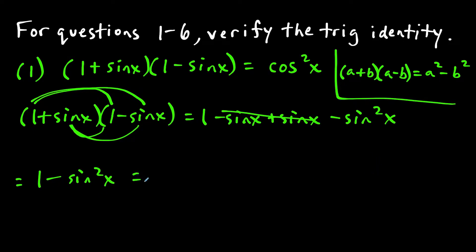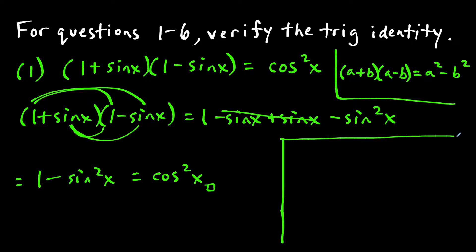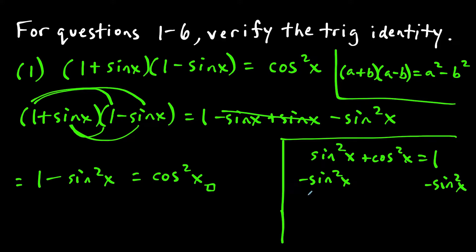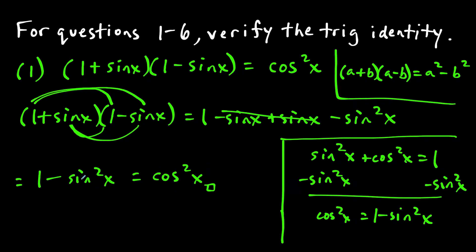At this step, it may not be super obvious, but we can conclude that one minus sine squared x equals cosine squared x, and this ends the verification. From the Pythagorean identity sine squared x plus cosine squared x equals one, subtracting sine squared x from both sides gives cosine squared x equals one minus sine squared x. Similarly, one minus cosine squared x can be replaced with sine squared x.